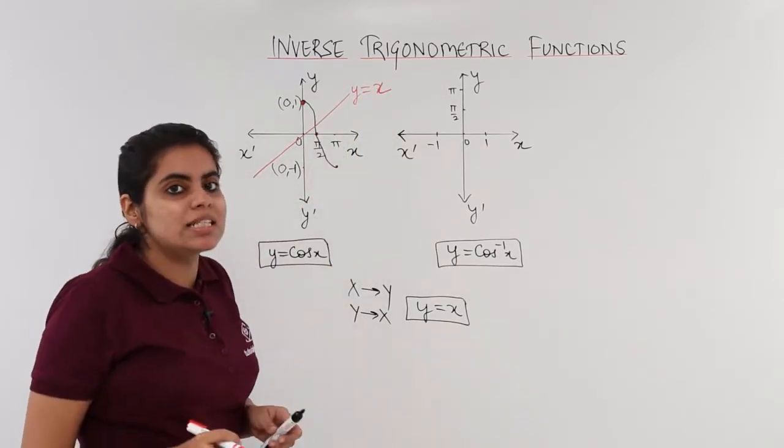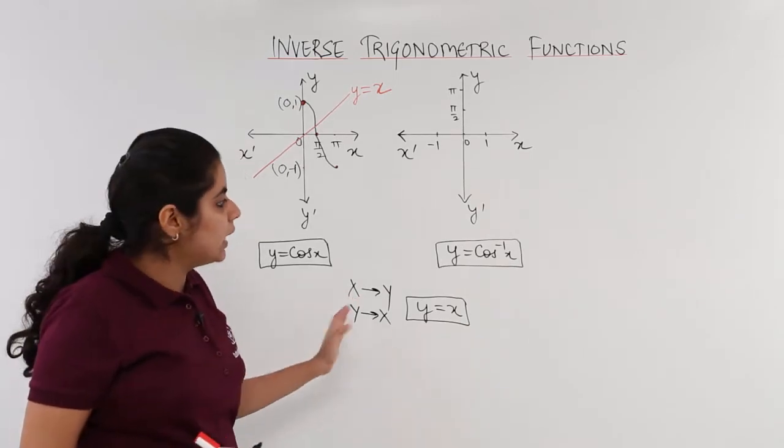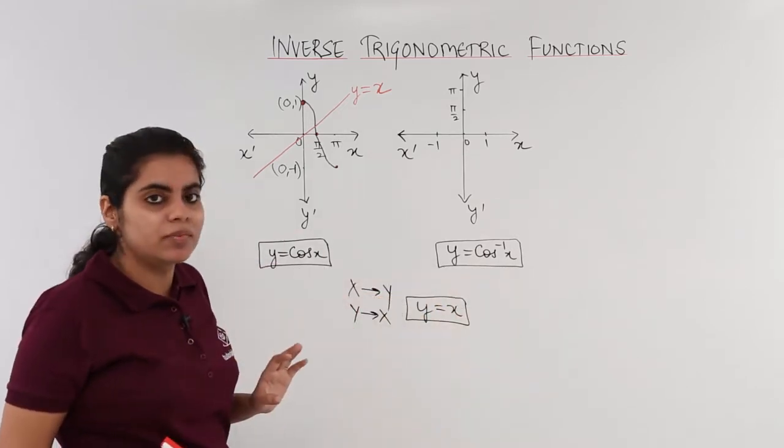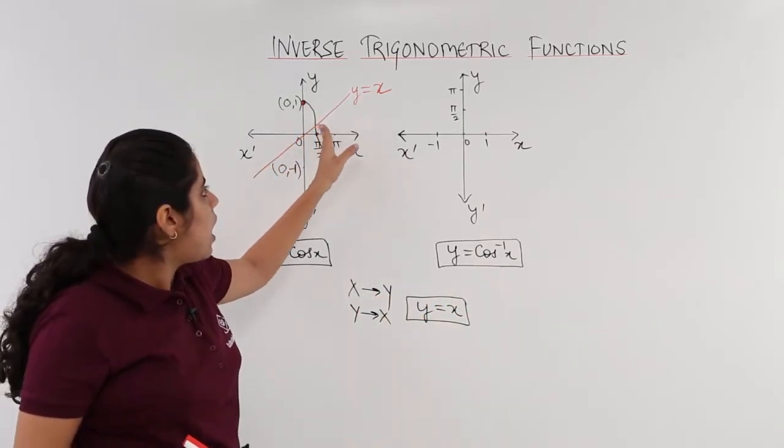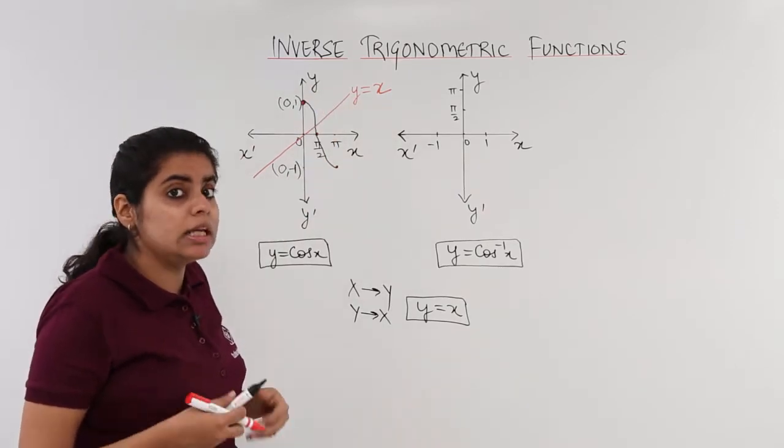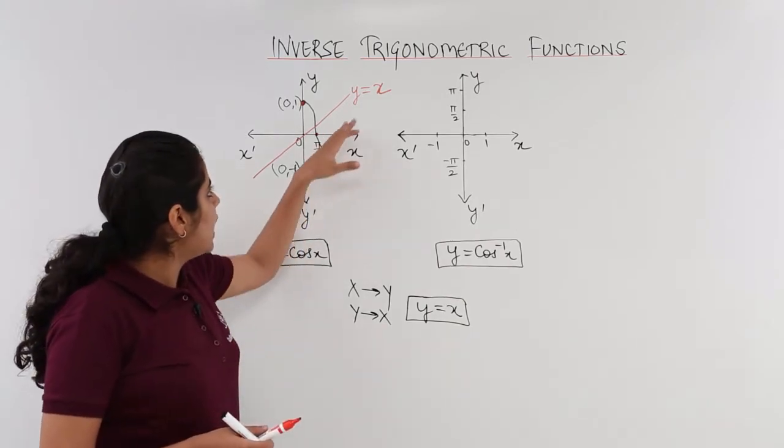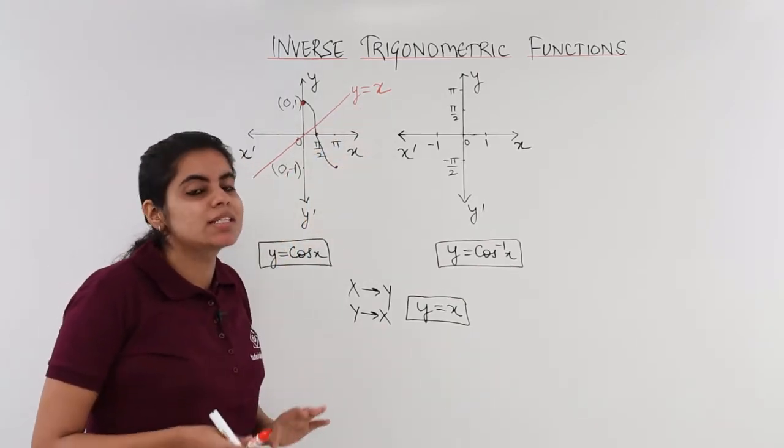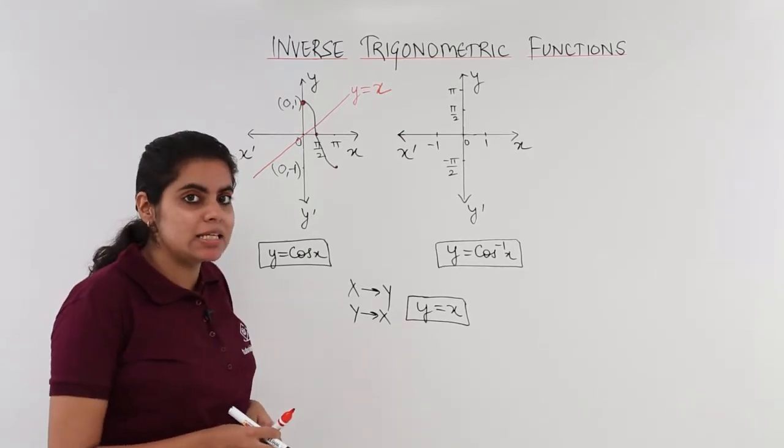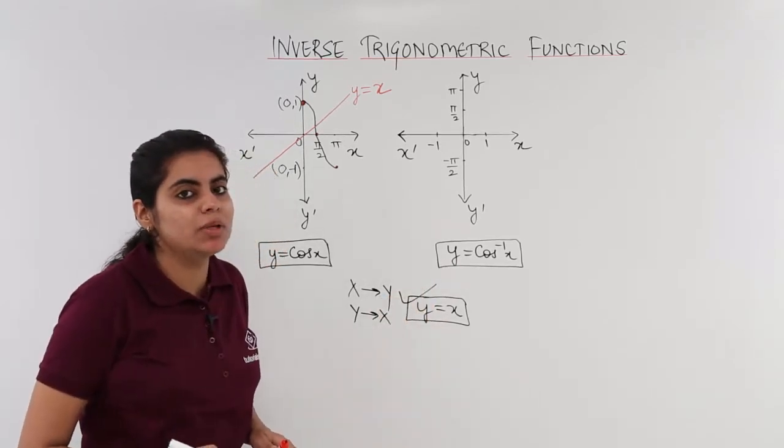Now I have to understand that I have to draw the reflection about this line to get the graph of cos inverse x from cos x. This is y is equal to x. I have the curve above it. I have to draw the curve in another manner. I have to just follow the simple rule that the line y is equal to x is my standard line. Reflection about this would give me the inverse.